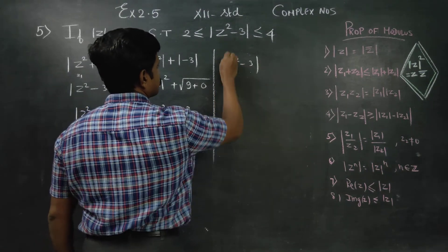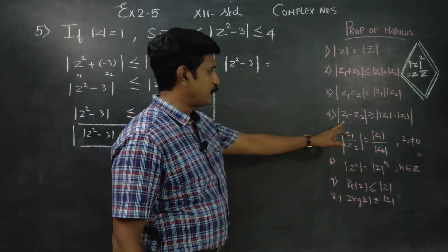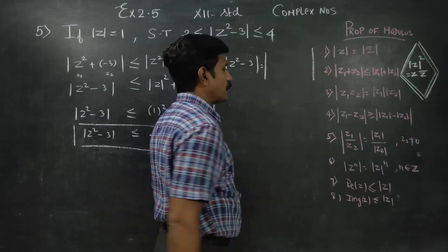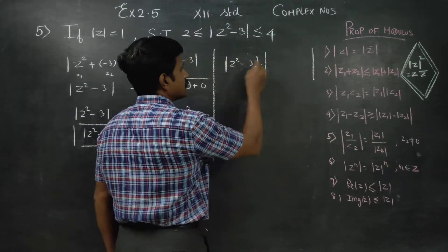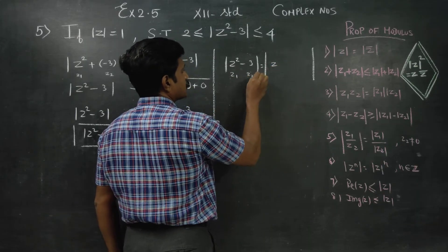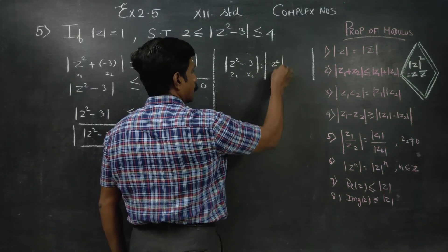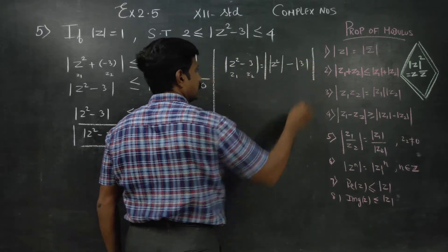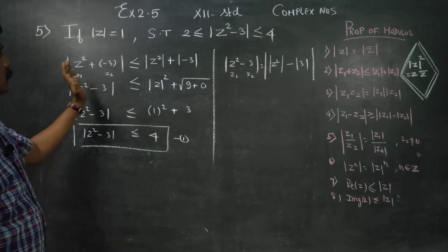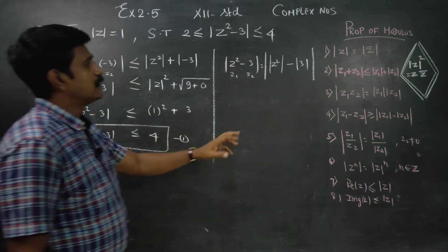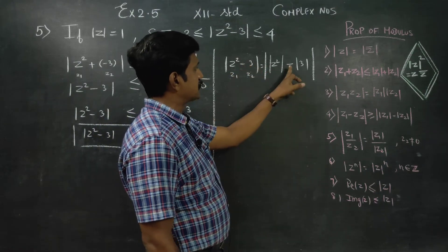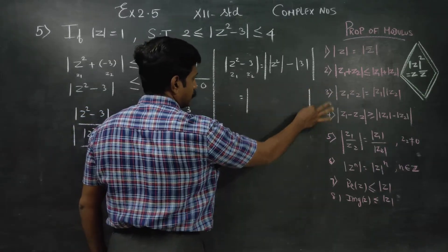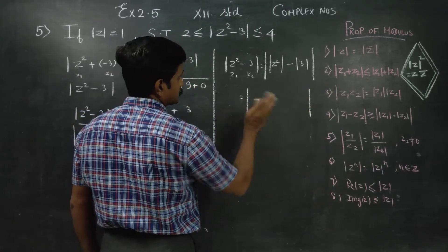Now for z² - 3, we use result number 1. By the reverse triangle inequality, |z1 - z2| is greater than or equal to the absolute value of |z1| minus |z2|. So |z² - 3| is greater than or equal to the absolute value of |z²| minus |z2|.